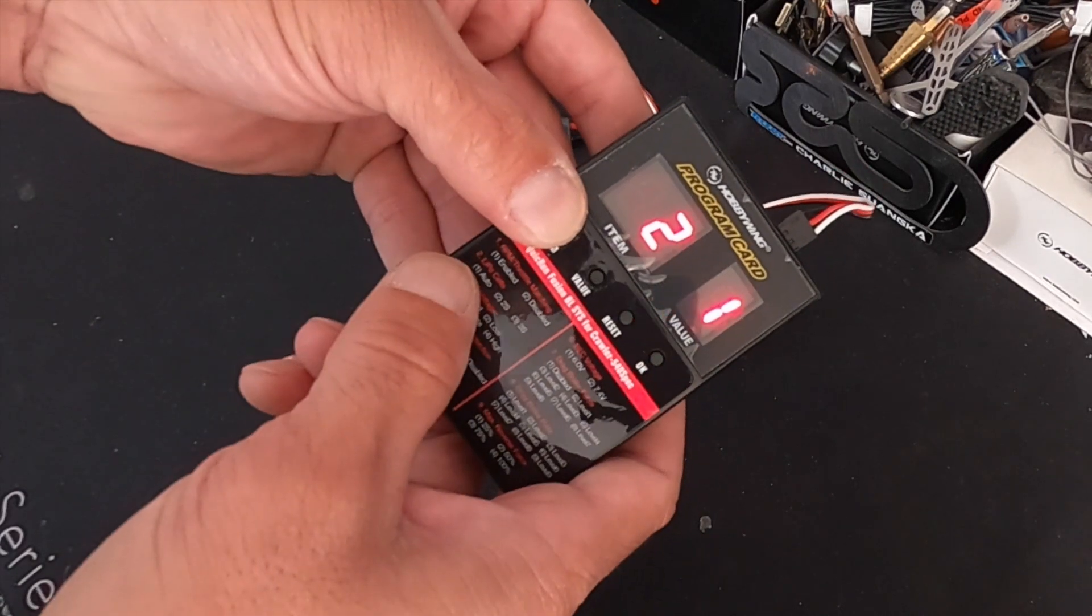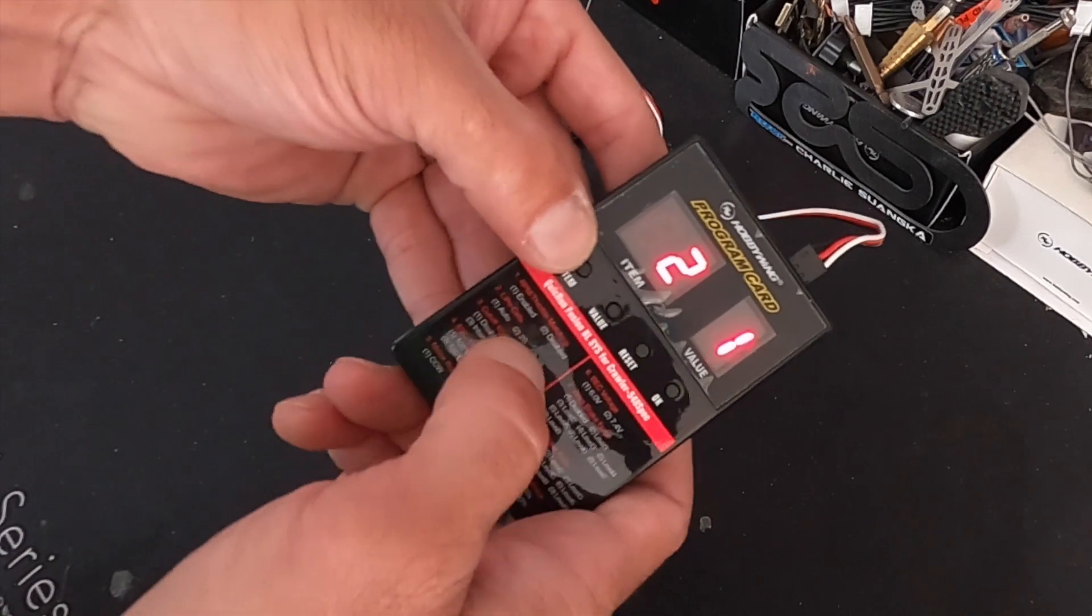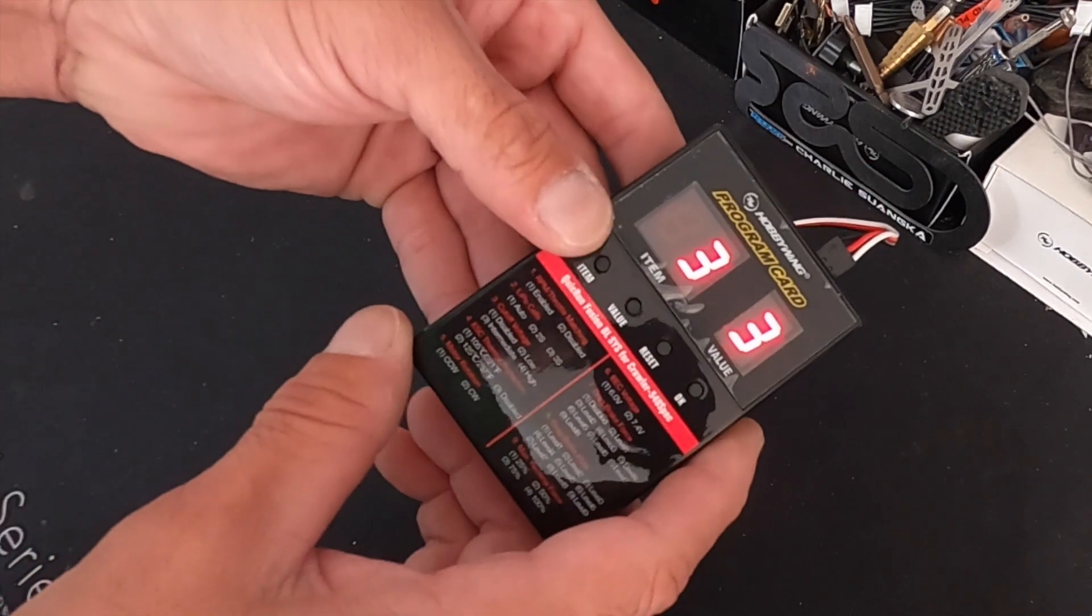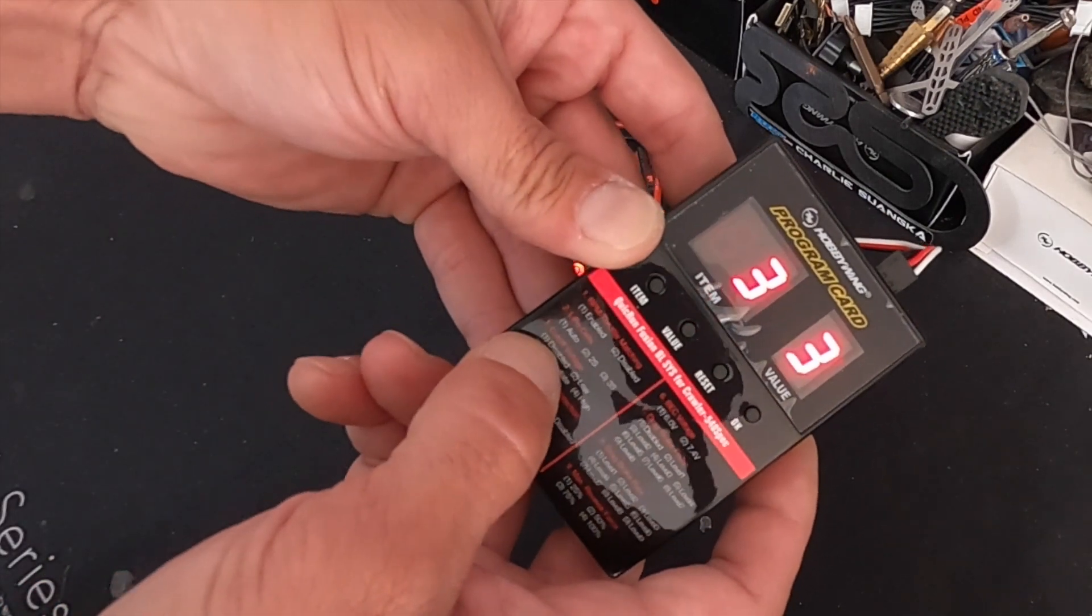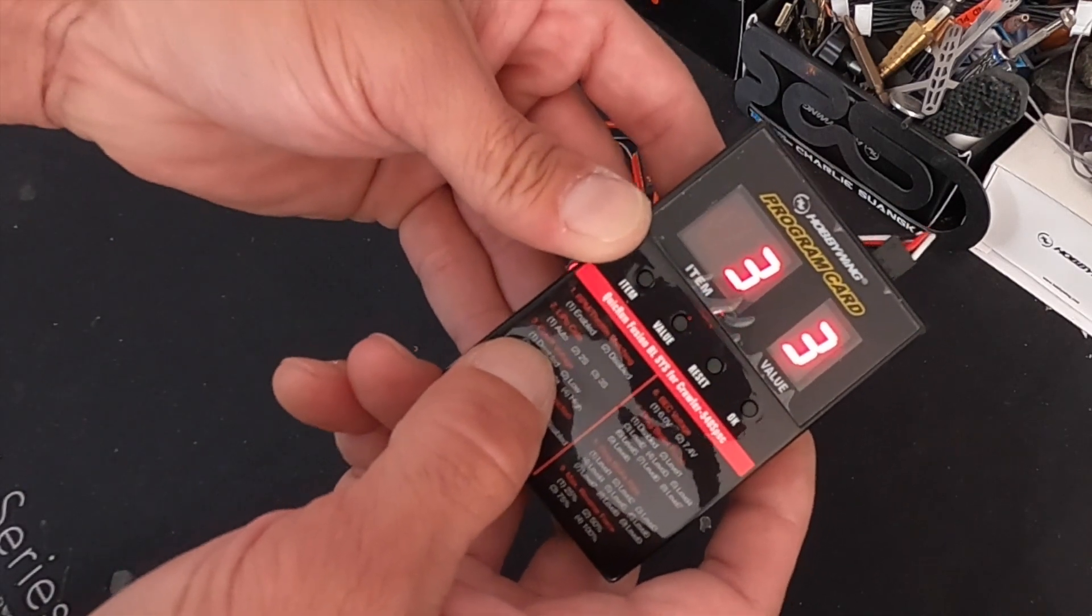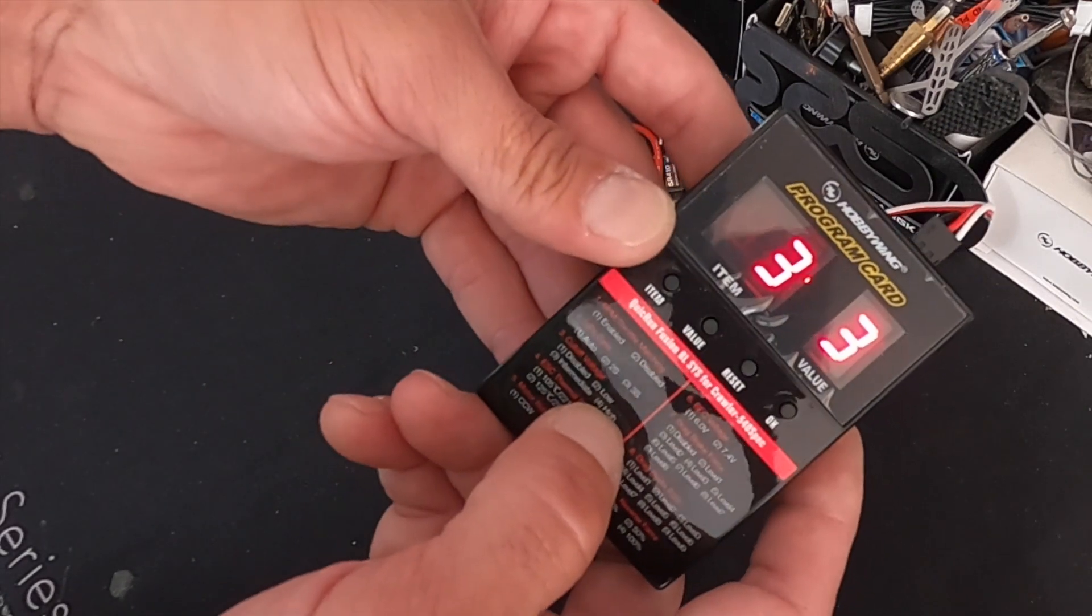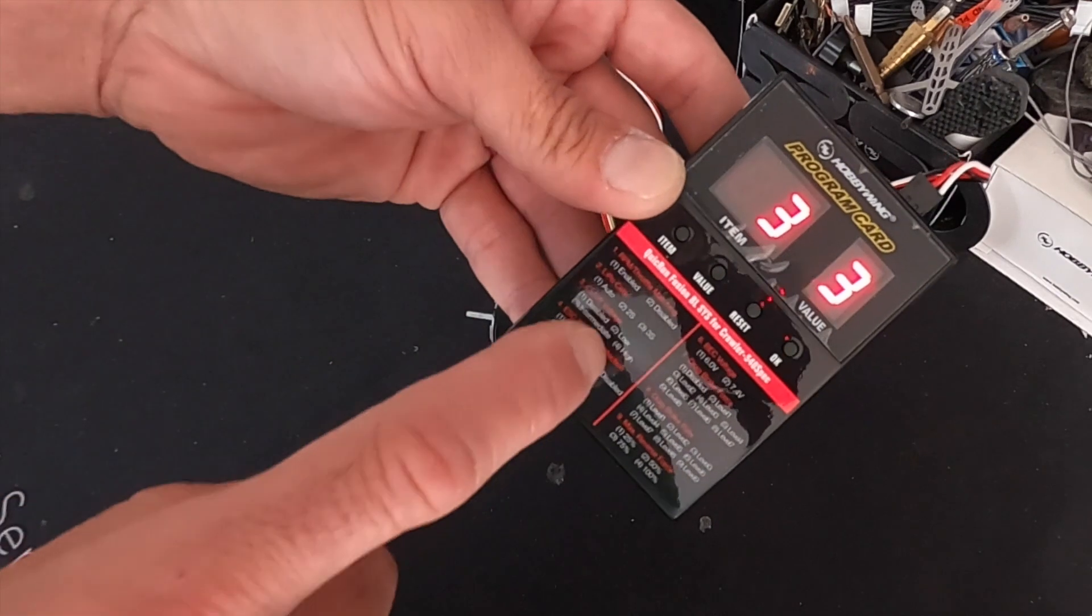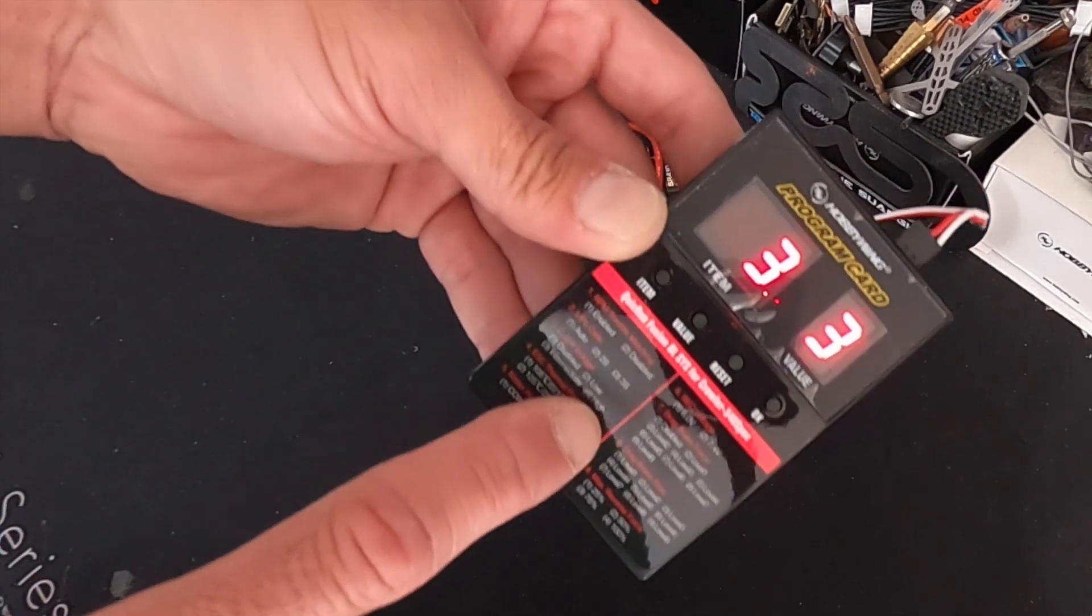Next one up is the lipo cells. That one's easy. Auto, 2S, or 3S. If you run 2 and 3S, you can leave it on auto. If you just run one all the time, you can set it dedicated to one of those values. The voltage cutoff, you can turn off the lipo cutoff. If you run nickel metal hydrides or lead acids or whatever, you turn your voltage cutoff off. And then there's a low, intermediate, and high setting. And this stands for the level of the voltage cutoff. Low is lower voltage. Intermediate is medium. And high is the highest voltage or safest, if you will.